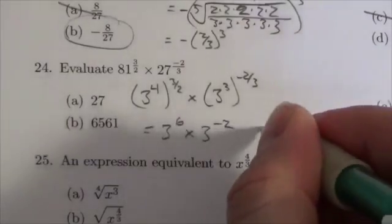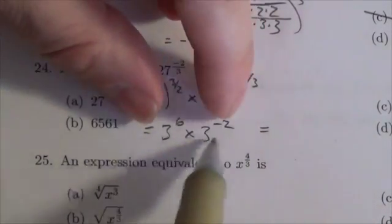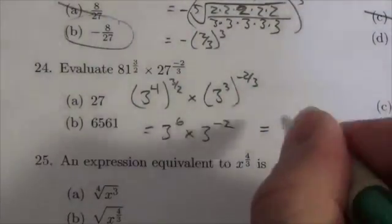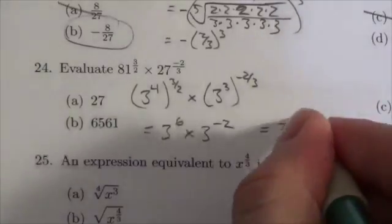So we're making some headway here. All of a sudden we've simplified this down. To multiply them together, because the bases are the same, we just got to add the exponents. So this is going to become 3, well 6 minus 2, or 6 plus negative 2 is just going to be 4.